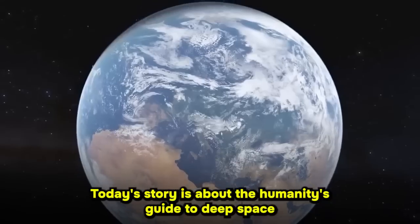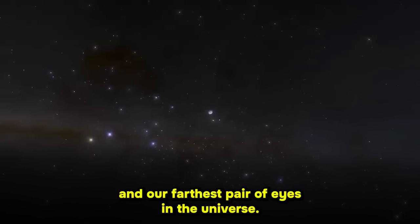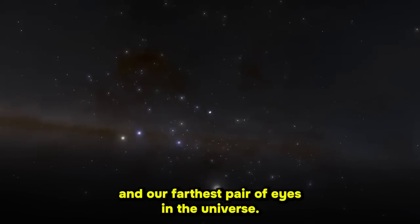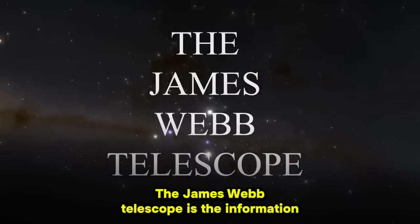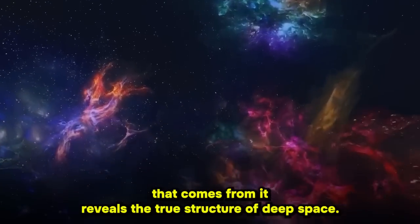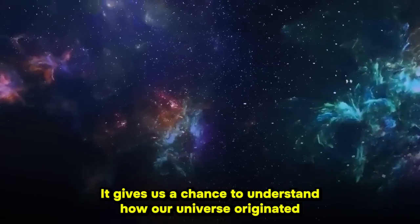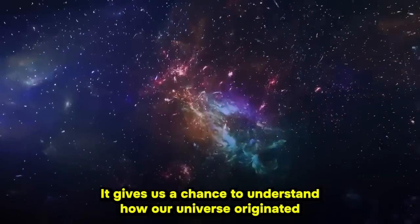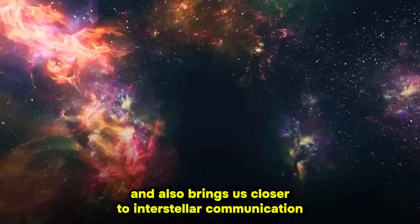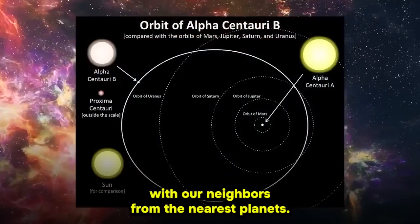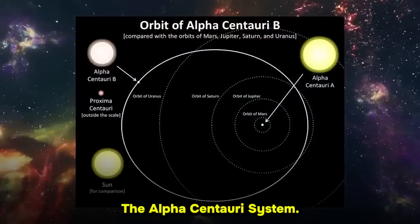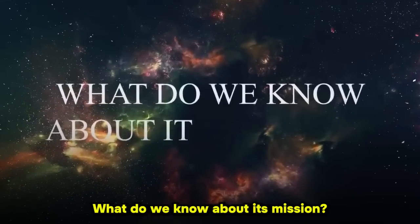Today's story is about humanity's guide to deep space and our farthest pair of eyes in the universe, the James Webb Telescope. The information that comes from it reveals the true structure of deep space. It gives us a chance to understand how our universe originated and also brings us closer to interstellar communication with our neighbors from the nearest planets, the Alpha Centauri system. What do we know about its mission?